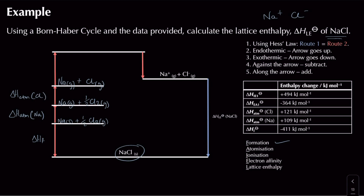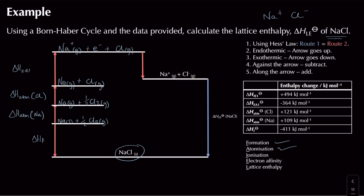So there's our enthalpy change of atomization done — atomization of sodium and atomization of chlorine. The next part is ionization: I need to ionize sodium to get sodium plus ions, so we have the first ionization energy (IE₁). Sodium forms gaseous Na⁺ ions plus electrons, while chlorine stays as individual atoms. Those chlorine atoms then grab those electrons and form chloride ions — that's the first electron affinity (EA₁). Those two steps are done.